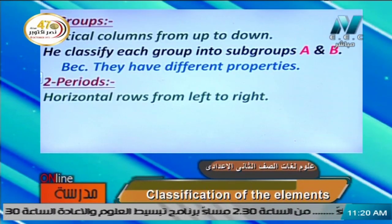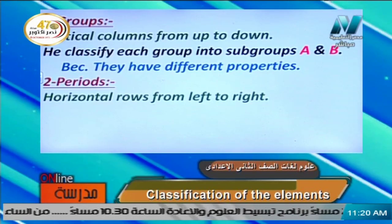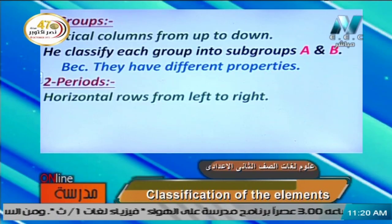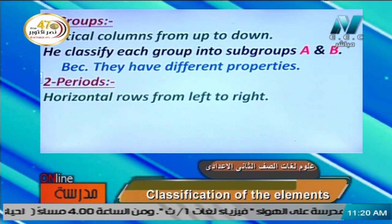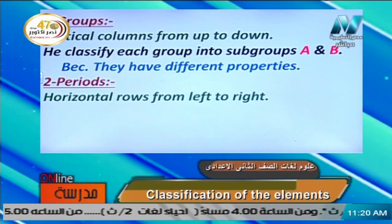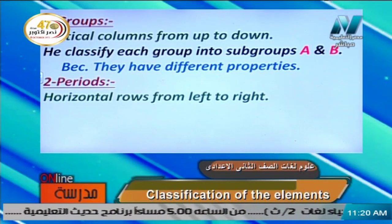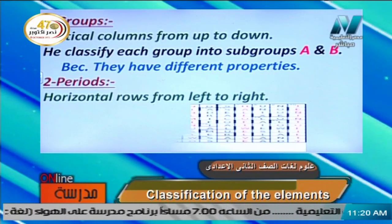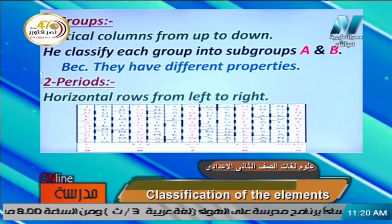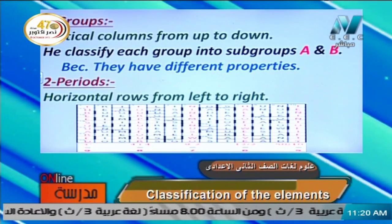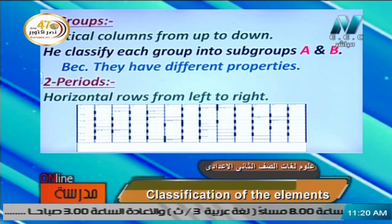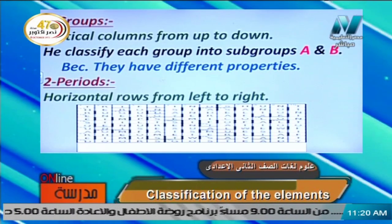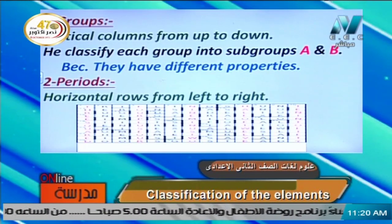Periods are horizontal rows going from left to right. Mendeleev's table consists of vertical columns from top to bottom and horizontal rows from left to right. We use the term 'group' instead of columns, and 'period' instead of rows. So Mendeleev's table has groups and periods.